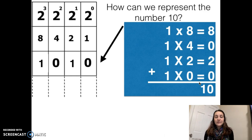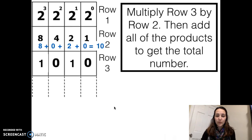If we wanted to represent an even bigger number, like 10, we could put a 1 in the 8 spot. That would give us 1 times 8, which is 8. A 0 in the 4 spot, a 1 in the 2 spot, and a 0 in the 1 spot. When we add all these together, we get 10, which is the value we wanted to represent.